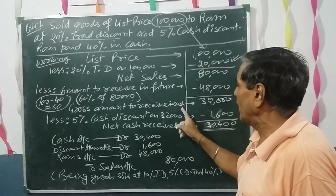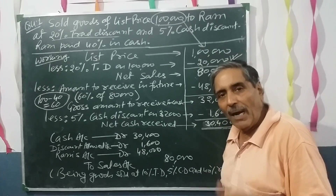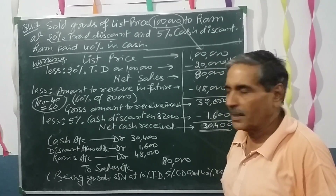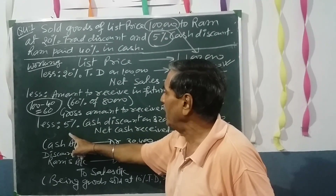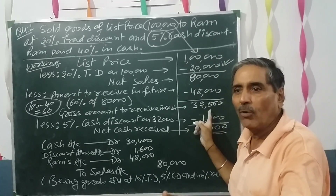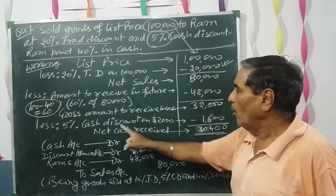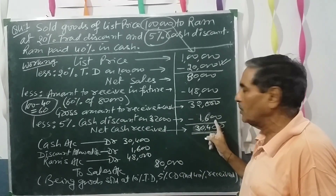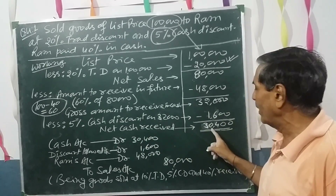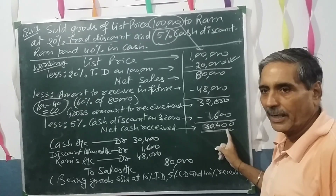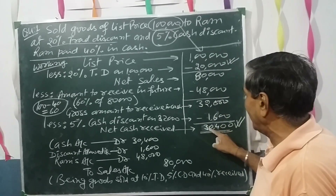The gross amount to receive in cash is ₹32,000. It is called gross because we still have to subtract the cash discount. The cash discount given in the question is 5%, and it is calculated only on the amount to be received in cash. So 5% of ₹32,000 comes to ₹1,600. We subtract ₹1,600 from ₹32,000, and the net cash received in hand is ₹30,400.